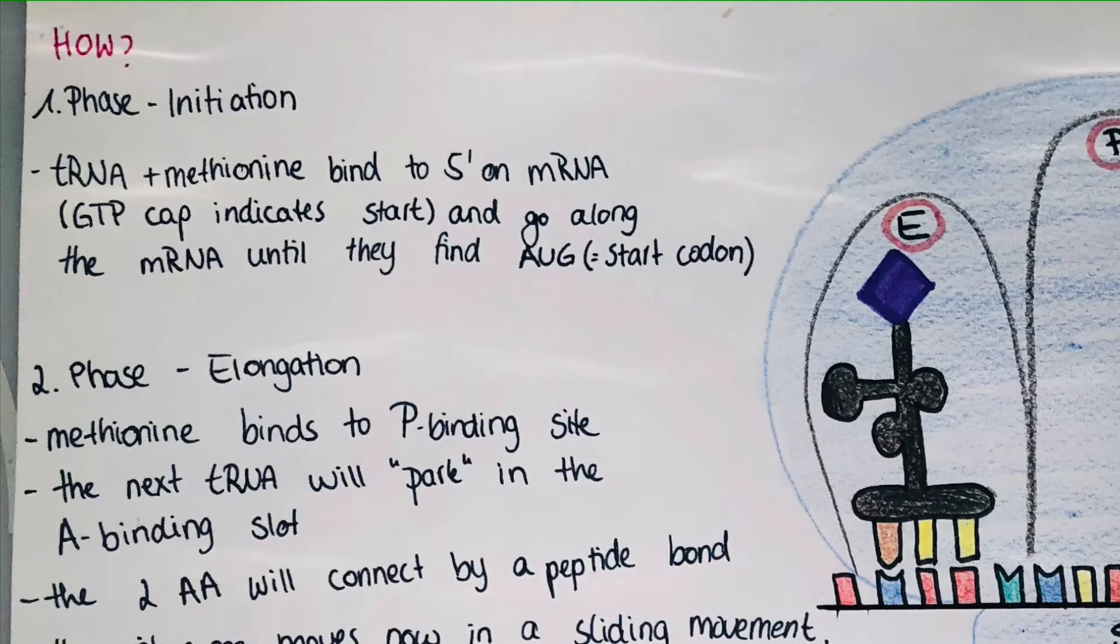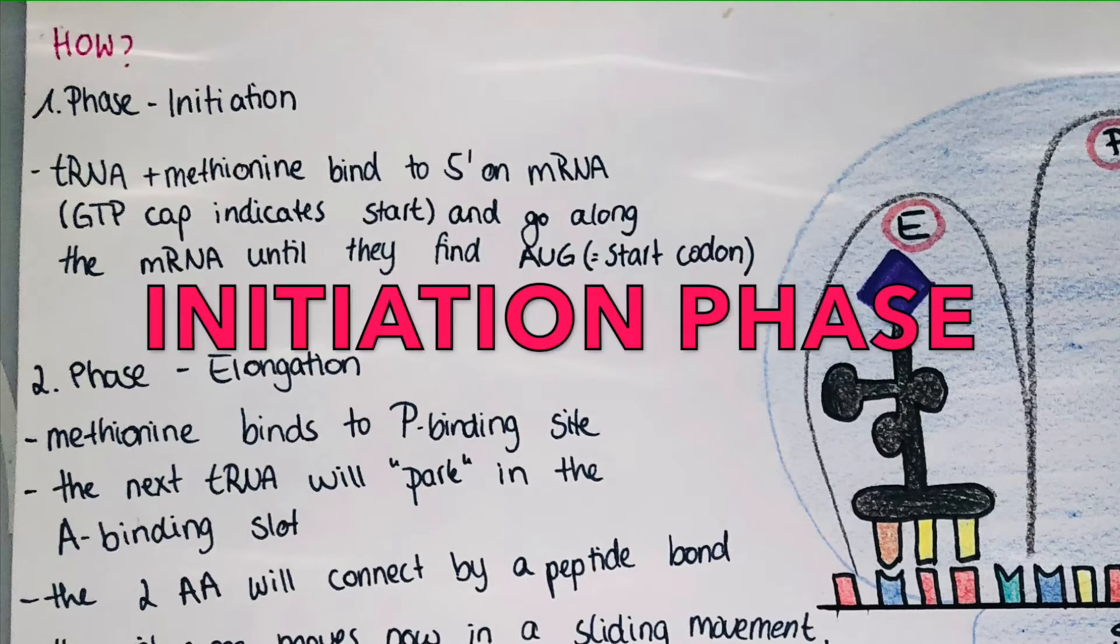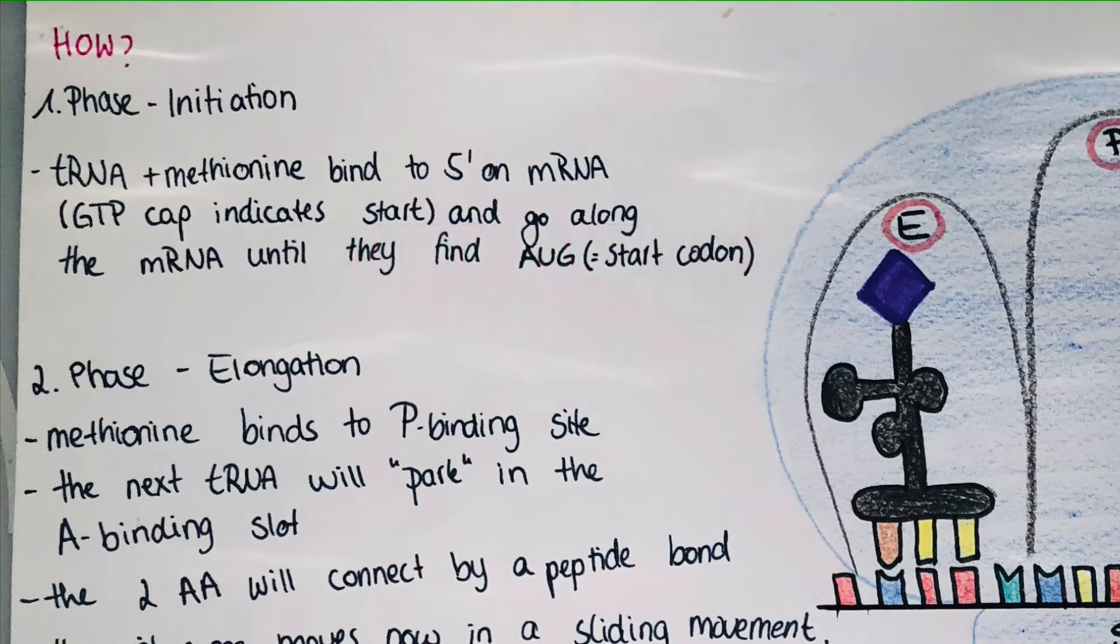This process can be divided into two main phases, the initiation and the elongation. In the initiation phase, a tRNA or transfer RNA and methionine bind to the 5' end on an mRNA where the GTP cap indicates the start and they start to go along the mRNA until they find their start codon. A start codon is a triplet of A, U and G bases and their methionine will bind to the P binding site within the large subunit of the ribosome.